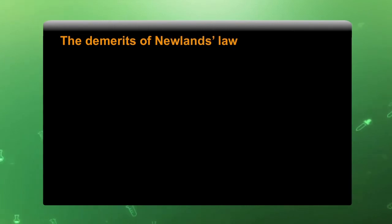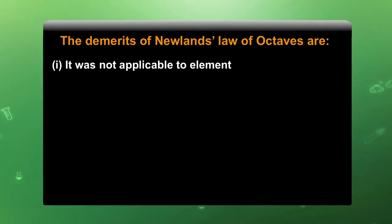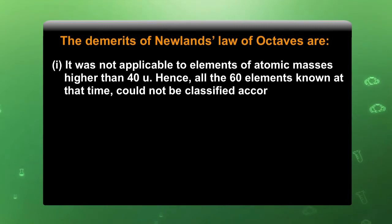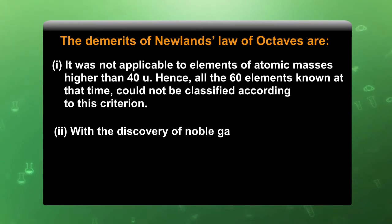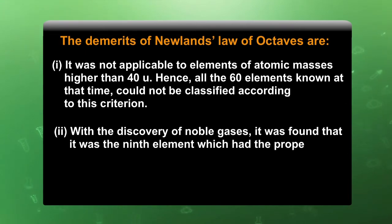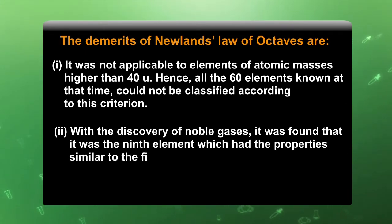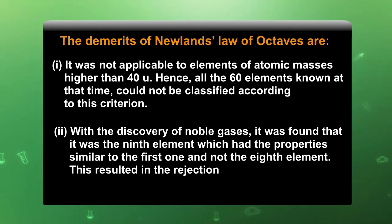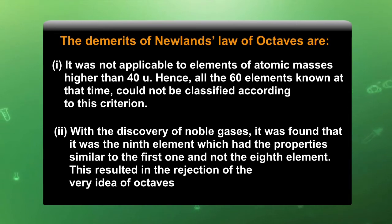The demerits of Newland's Law of Octaves are: it was not applicable to elements of atomic number higher than 40, so all 60 elements known at that time could not be classified according to this criterion. With the discovery of noble gases, it was found that it was the ninth element which had properties similar to the first one, and not the eighth. This resulted in rejection of the very idea of octaves.